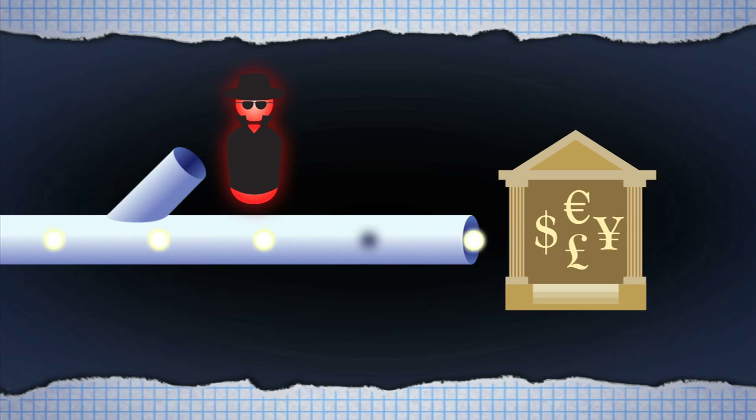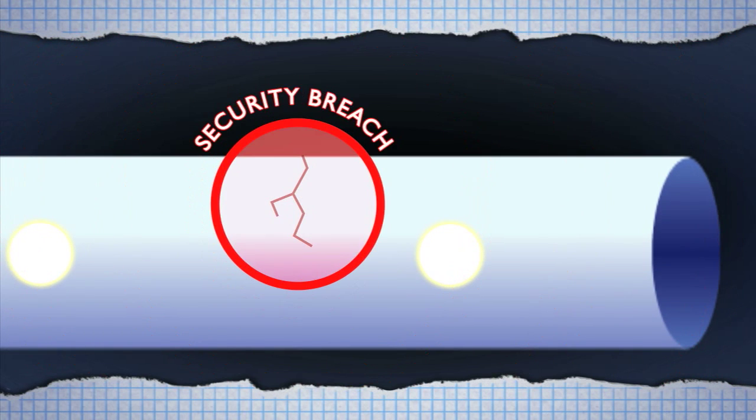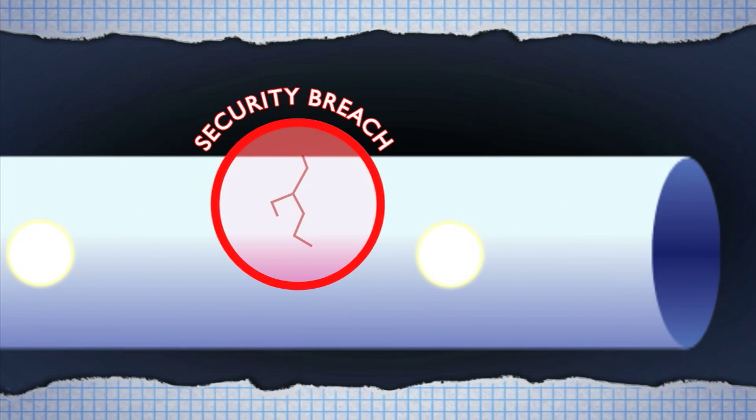If anyone tampers with the fiber the bank immediately detects this as increased noise on the signal. The system is so sensitive that tiny errors in the fibers themselves are detected. And just to be safe these errors are treated like a security breach.